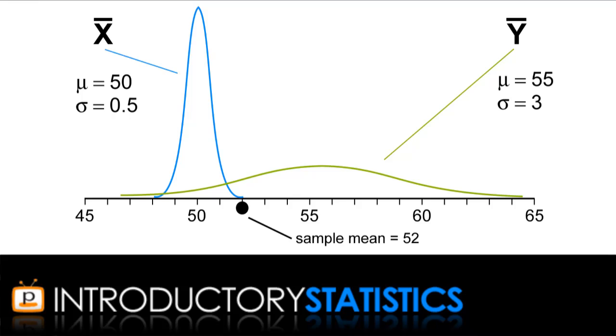If you now guess population y, you'd probably be correct. The two sampling distributions tell you what sort of sample means you would collect from the two populations. 52 looks extreme in x, but not so extreme in y. So we infer that the sample probably came from y.